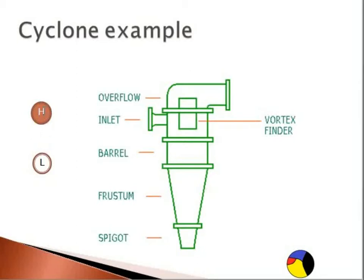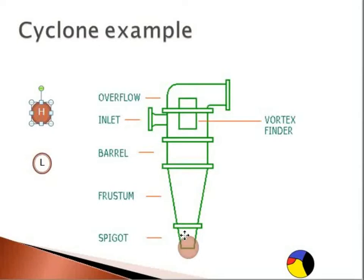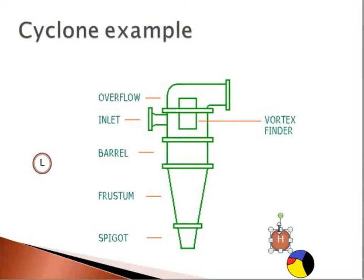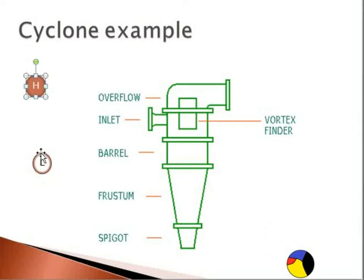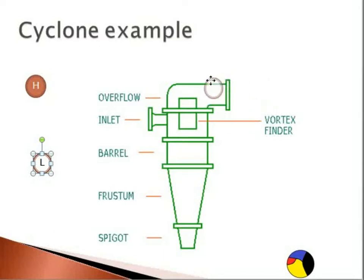The heavy particles will go into the inlet, swirl around, and in most cases they'll come out the spigot. Of course, there's a probability — some will in fact go through the overflow. The light particle will go into the inlet and swirl around, but it has a higher probability of coming out of the overflow. Of course, it has a chance of coming out of the spigot.